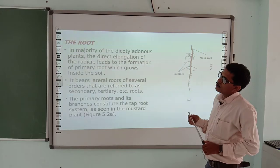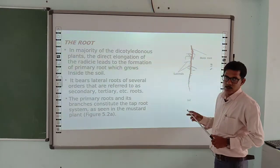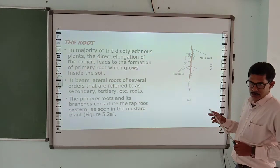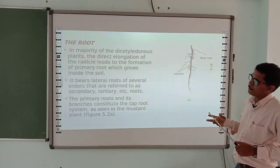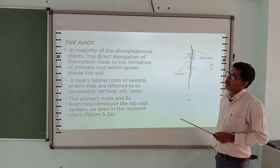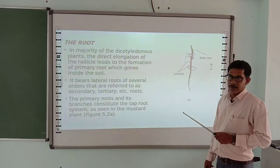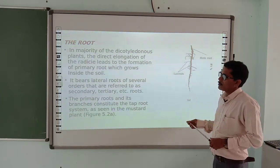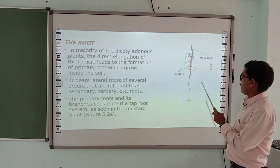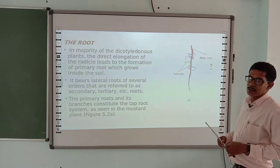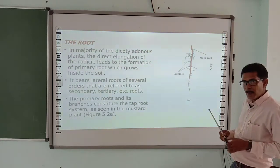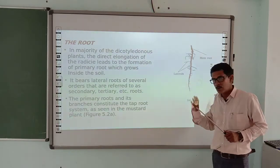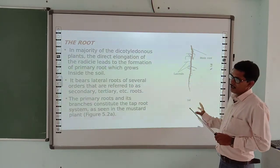Firstly, we should know what a root is. In the majority of dicotyledonous plants — dicots in which two cotyledons are found — the direct elongation of the radicle leads to the formation of the primary root, which grows inside the soil. When the seed germinates, the radicle grows downward into the soil and forms roots inside the soil.